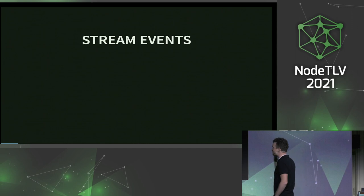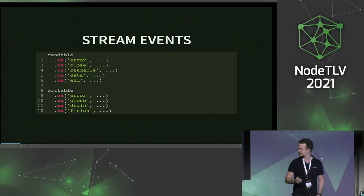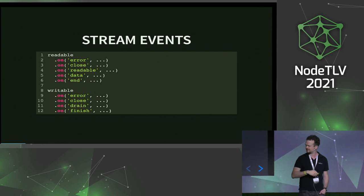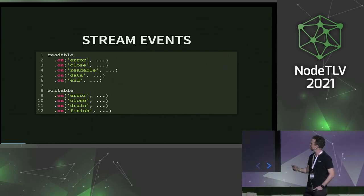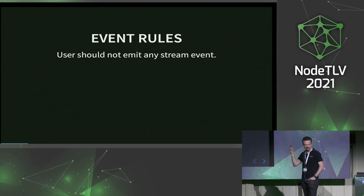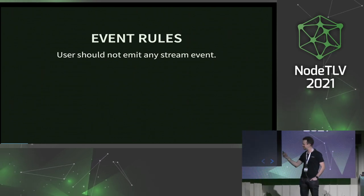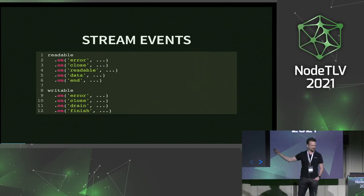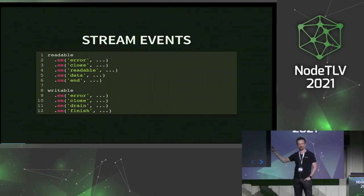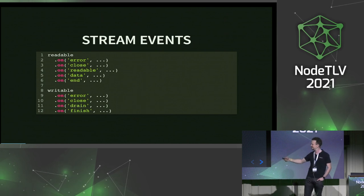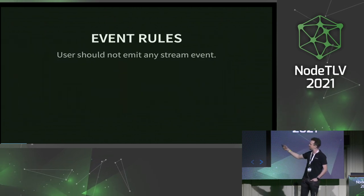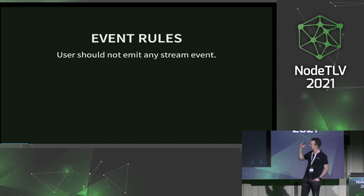I'd like to start with stream events — these are the trickiest ones. These are the primary events you have in streams today that you're going to use. There are some rules with events we want to follow. Users should not be emitting these stream events — please don't do emit error, for example. I've seen a lot of code where users, when there's an error in their stream, just emit error. Don't do that; use destroy and send the error in, because if you emit error you'll break a lot of invariants that streams expect. Don't emit any of the native stream events or you'll end up in undefined behavior.